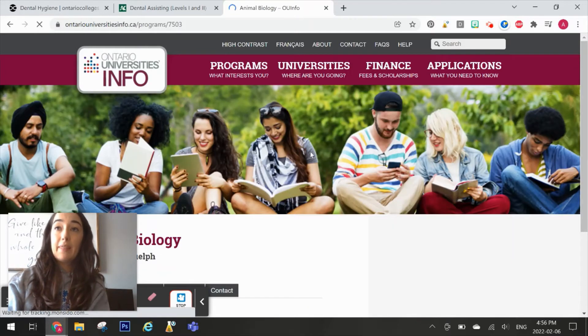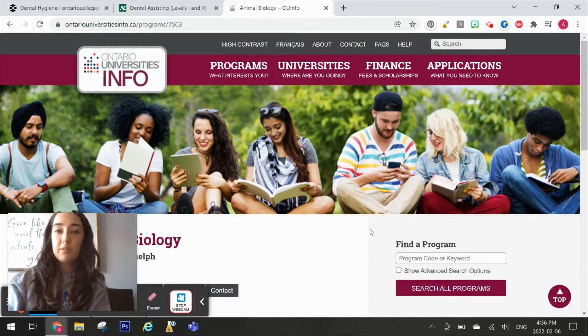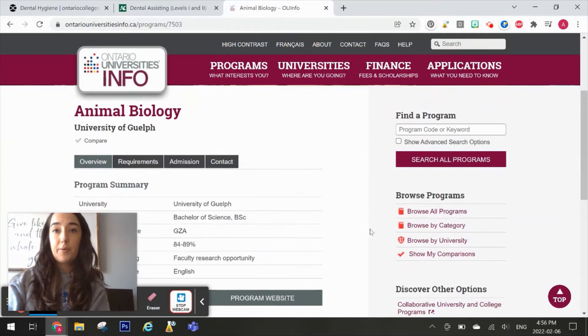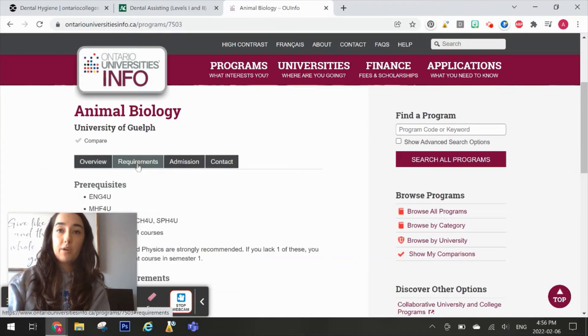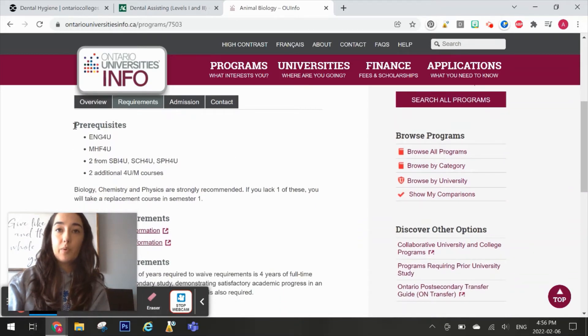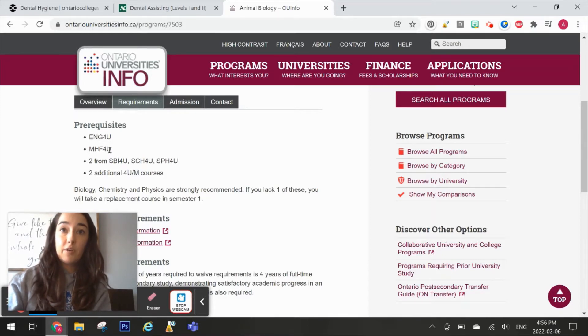I'm going to click on that one and this website actually tells me the prerequisites I need. I don't have to go elsewhere. I just click on requirements and this tells you what it is. Again, this is the information you need to write down to make sure you are programming and planning your high school career correctly. This program, for example, requires MHF4U. Let's figure out how I can get into that grade 12 class.